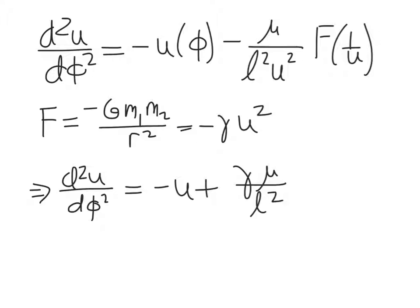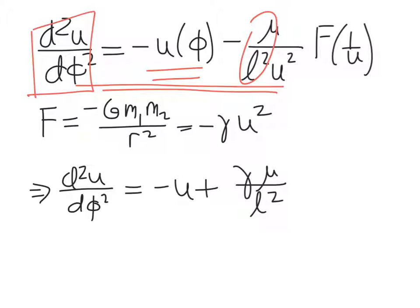Coming back to our dynamical equation, which we've now written as u, for u as a function of phi, second derivative of u with respect to phi is equal to minus u of phi, whatever that function is, minus a constant here, the reduced mass over the angular momentum squared for the orbit.